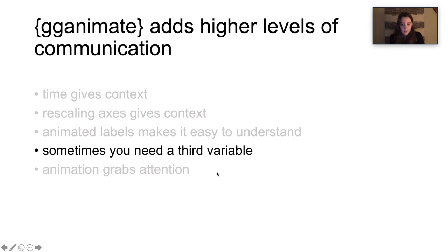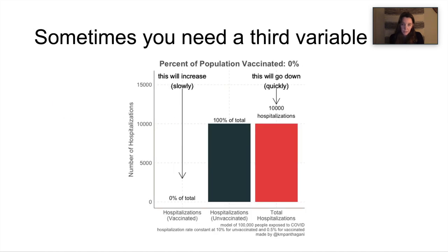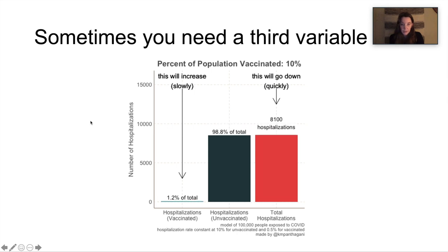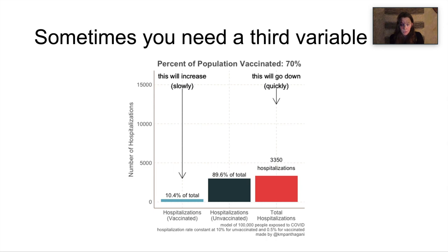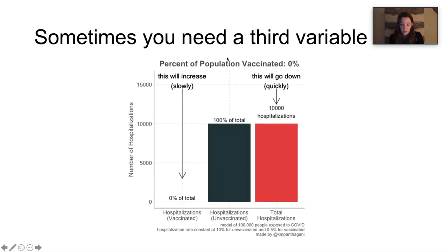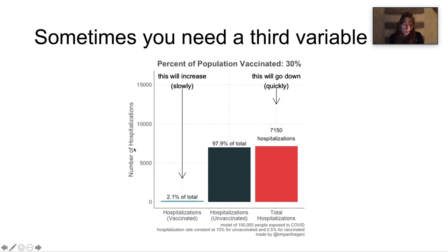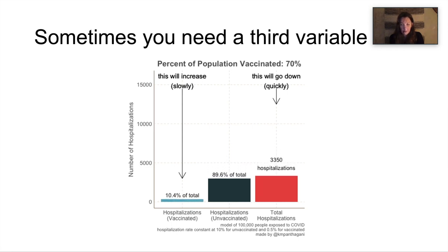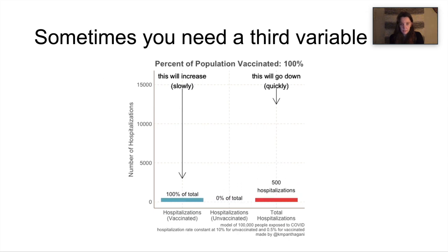All right. And last, sometimes you just need a third variable. There are things that you just can't plot in a static 2D plot that ggAnimate really allows you to plot. And here's an example of that. This is showing the confusing mathematical concept that as the percent of a population becomes increasingly more vaccinated, then the percent of all the hospitalizations for COVID who are vaccinated people will also increase. And so in this case, the variable we're animating over is not the x-axis and it's not the y-axis. It's a totally separate variable in my data frame. But it allows us to show three dimensions of the data because of the added dimension of time.